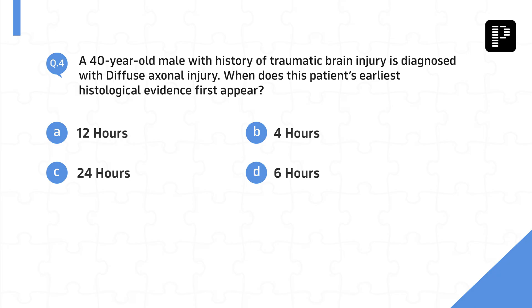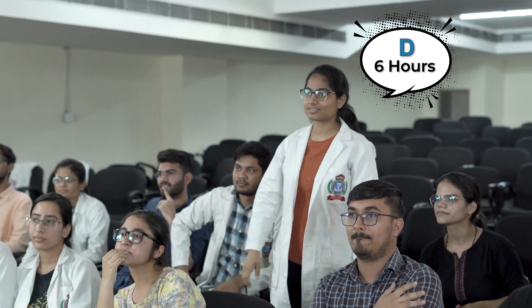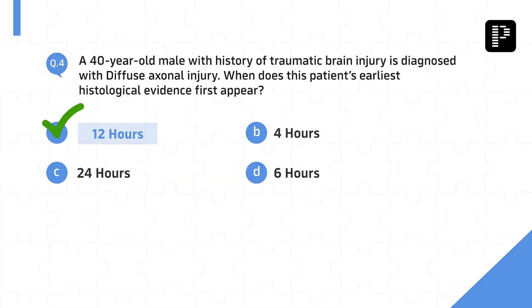A 40-year-old male with a history of traumatic brain injury is diagnosed with diffuse axonal injury. When does the patient's earliest histological evidence first appear? Six hours. Well, hours — no problem, it happens.